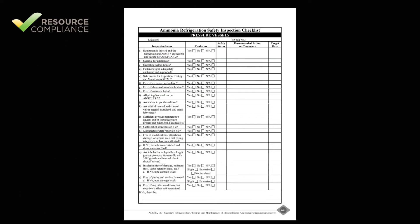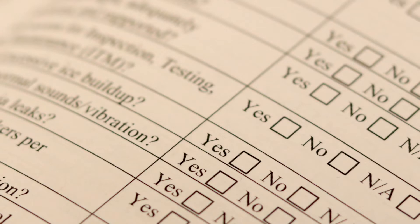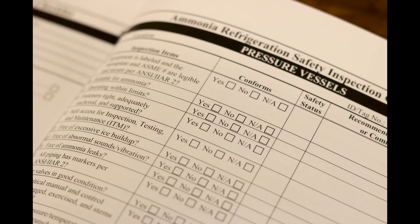The second page of the checklist contains 20 questions that should be answered yes, no, or not applicable. The wording of each question is such that a yes answer is always positive and a no answer indicates a deficiency. Some questions may not be applicable to a particular vessel and should be answered NA.